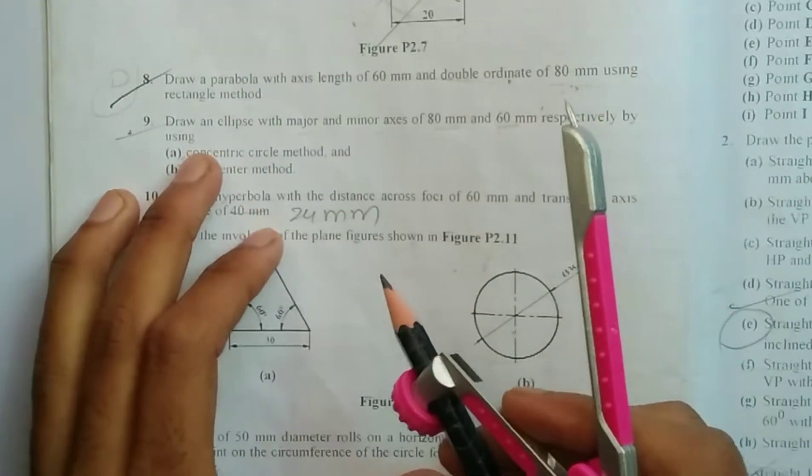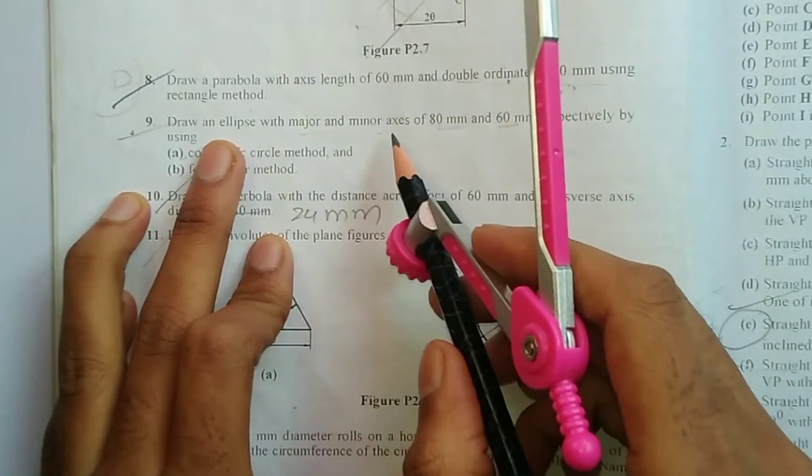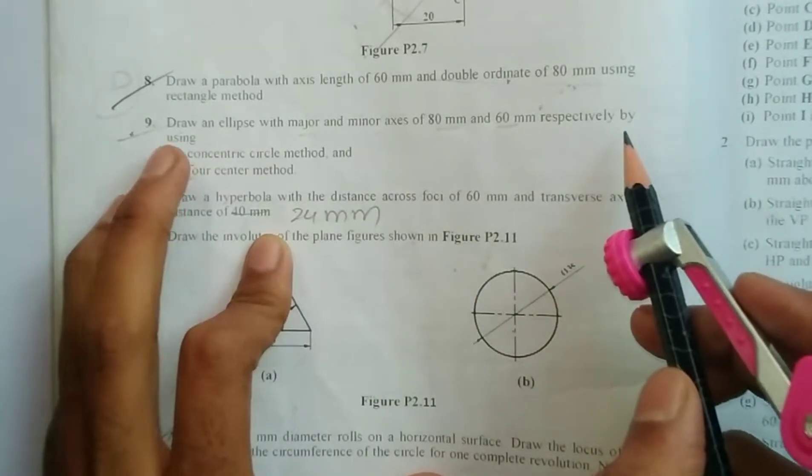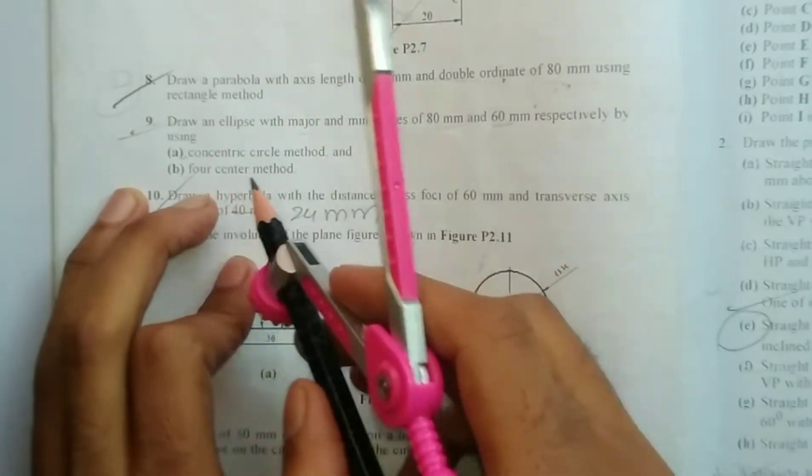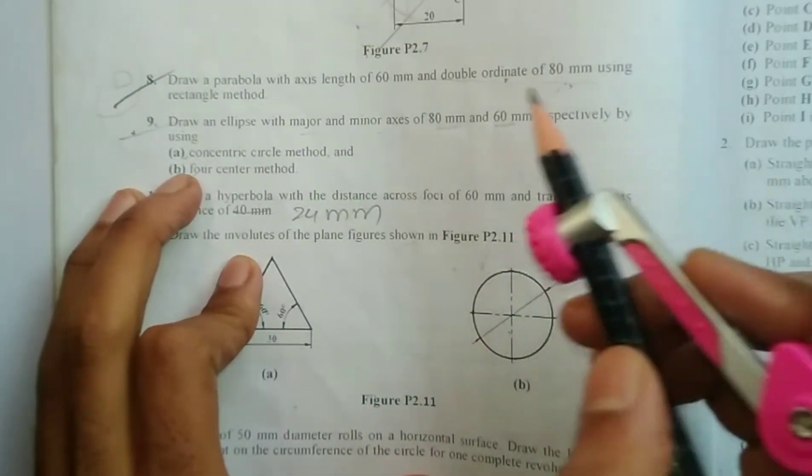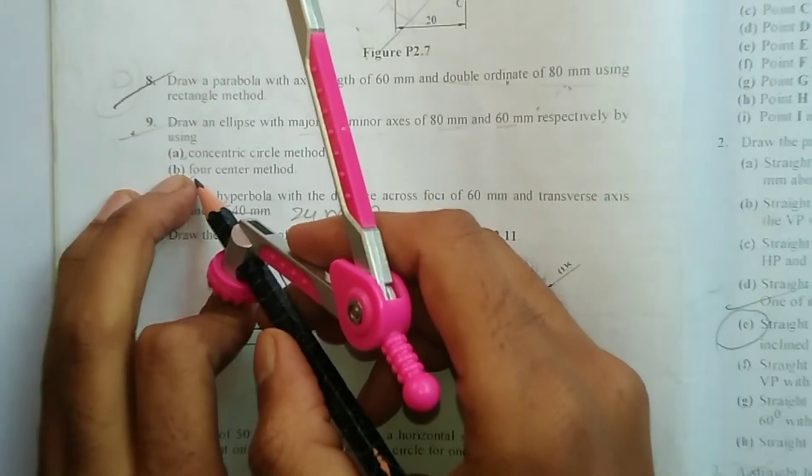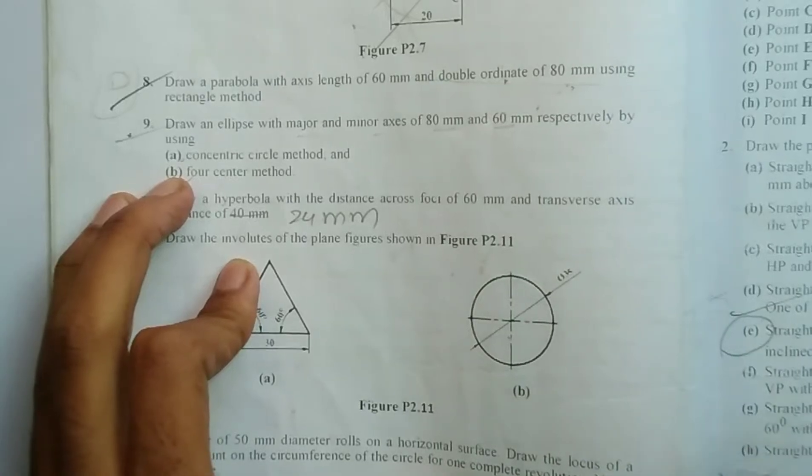Question number 9: Draw an ellipse with major and minor axis of 80 mm and 60 mm respectively by using concentric circle method and four center method. This video will cover the concentric circle method and next video will be four center method.